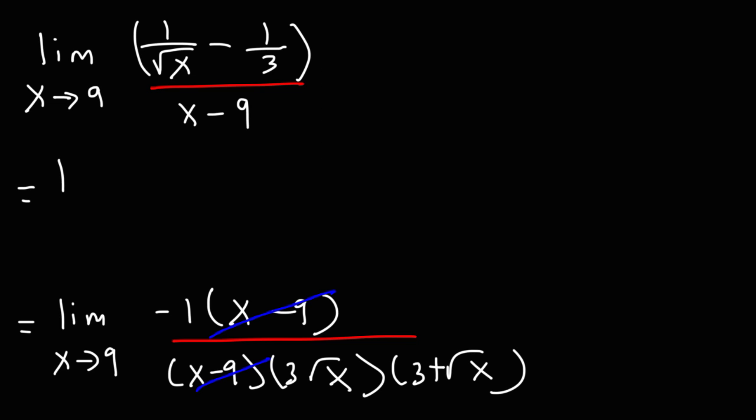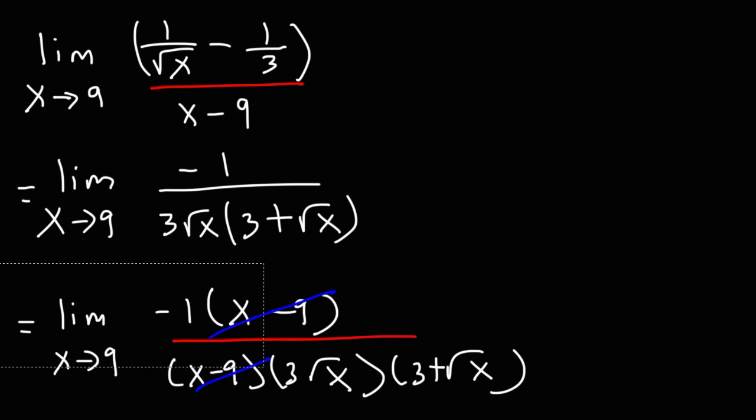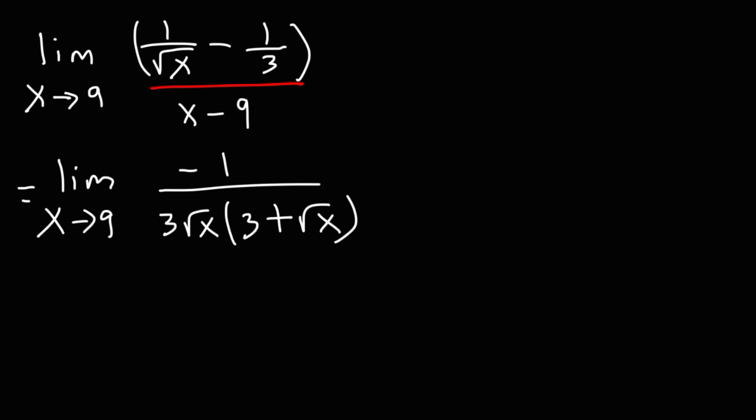And so what we now have is the limit as x approaches 9 of negative 1 over 3 square root x times 3 plus square root x. So at this point, we can now replace x with 9 because we're not going to get a 0 in the denominator of the fraction.